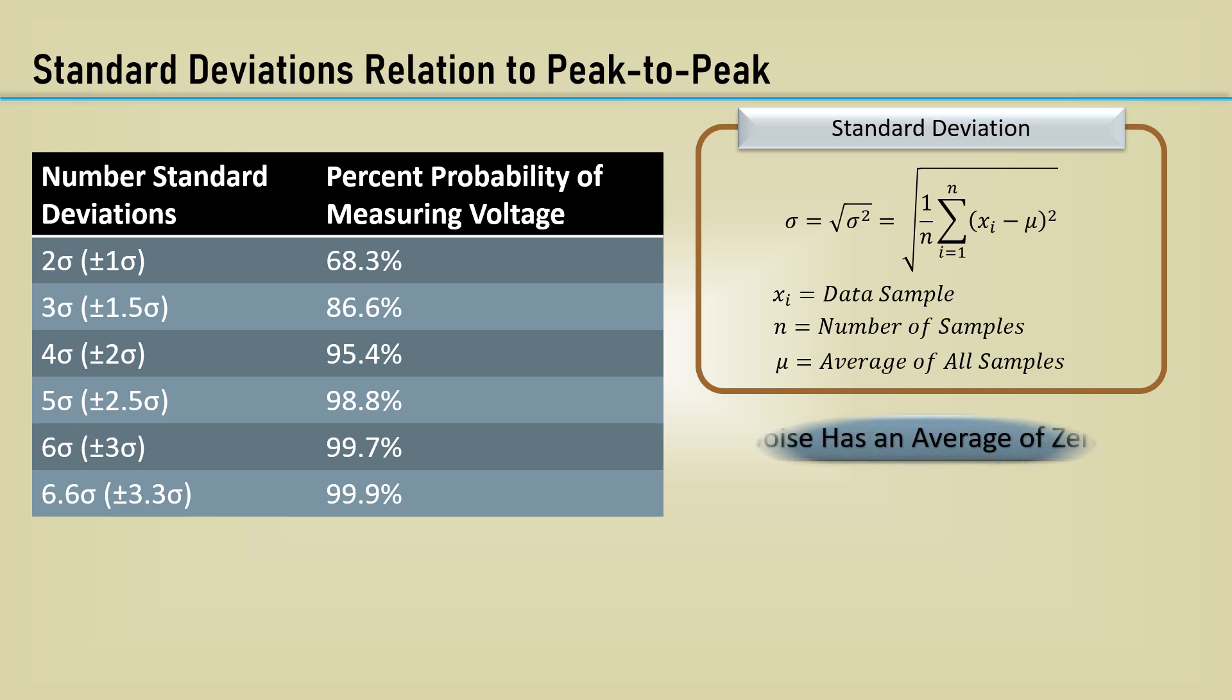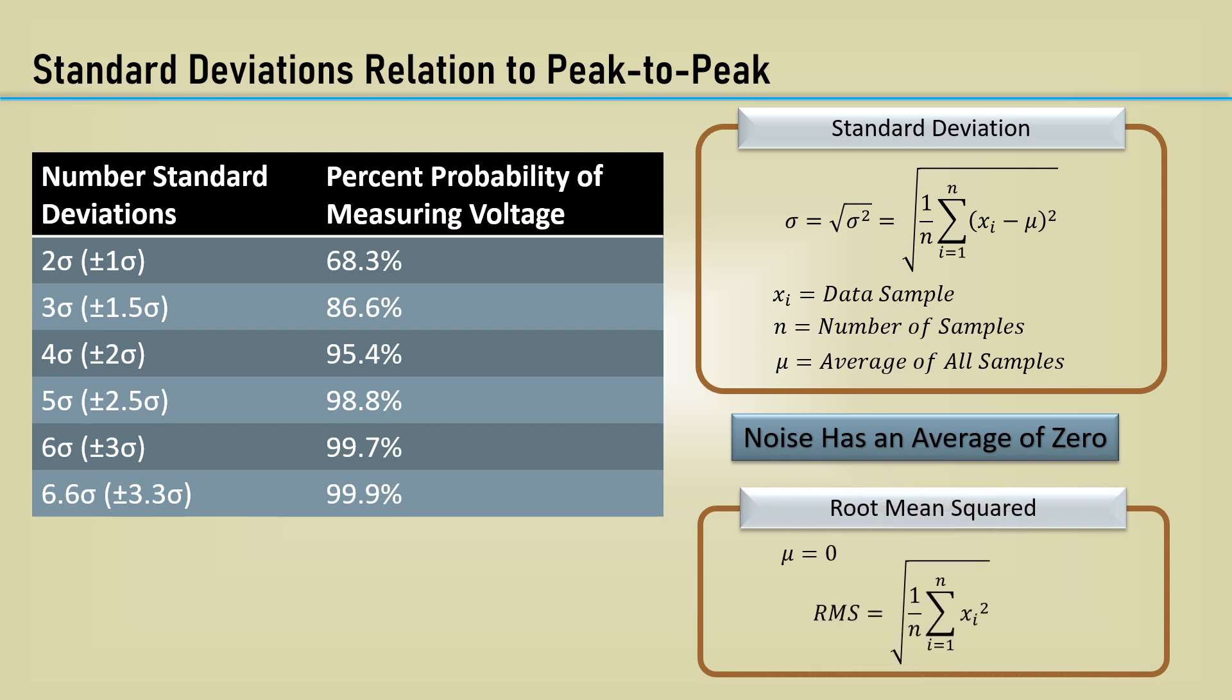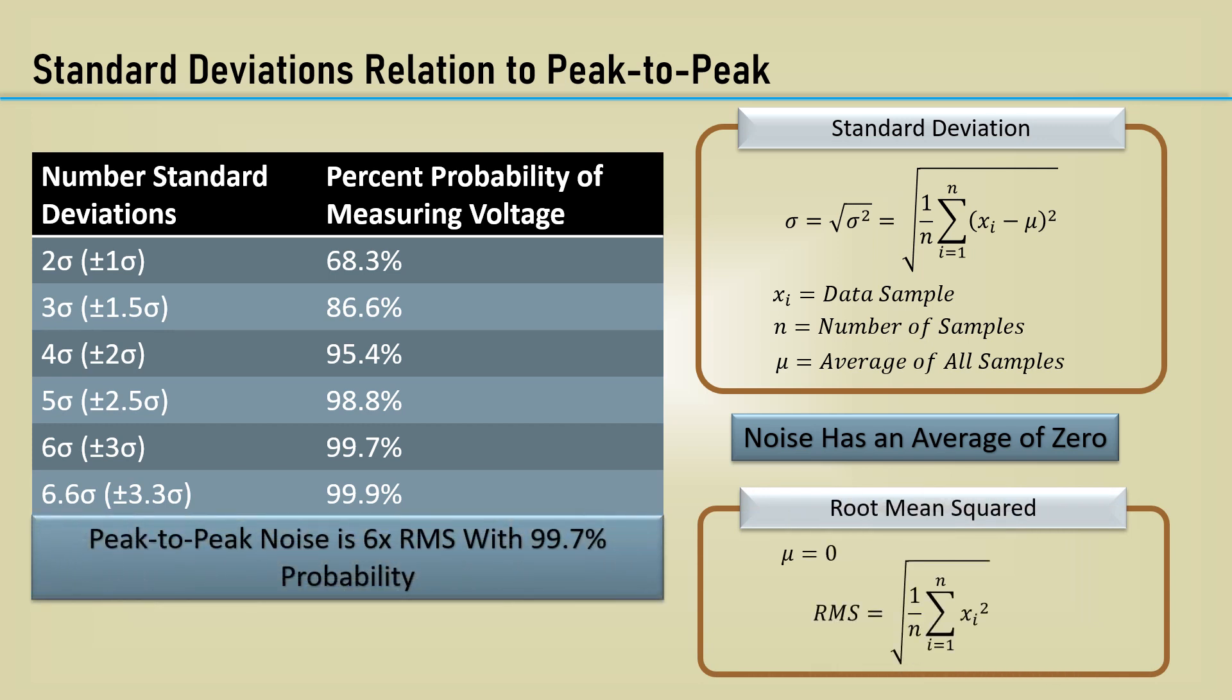Since noise has an average of zero, the standard deviation of noise is the same as the root mean squared voltage. The point of this demonstration is that peak-to-peak noise is assumed to be 6 times the RMS noise with a 99.7% probability. That is a common practice, and going forward, we will use the 6 times RMS factor to get the peak-to-peak noise.